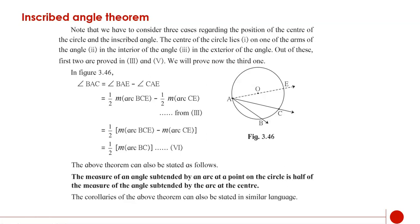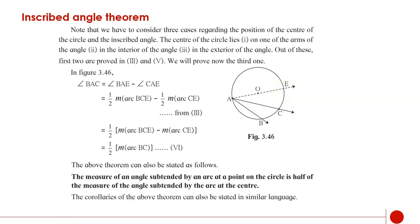In figure 3.46, angle BAC equals angle BAE minus angle CAE. From statement 3, this equals half of measure arc BCE minus measure arc CE, which gives half of measure arc BC. So angle BAC equals half of measure arc BC, completing the third case.